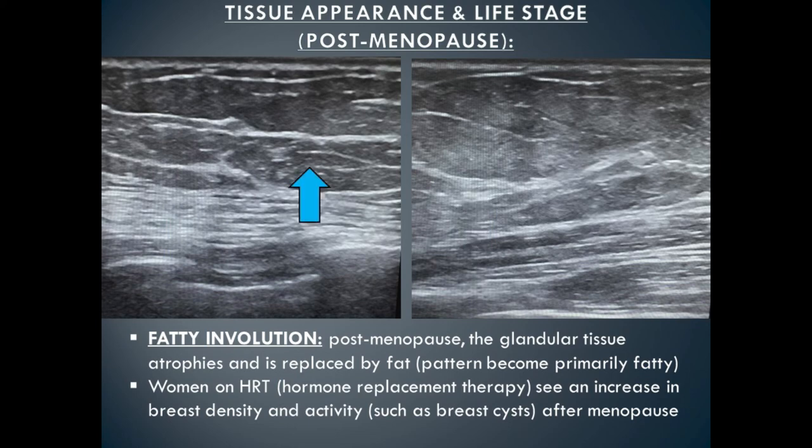In our last category, after menopause, the glandular tissue atrophies and is replaced by fat. The overall pattern becomes fatty with fewer areas of glandular tissue. Though this occurs in the majority of people, not everyone will have fattier tissue after menopause — some people still have very dense tissue. Women on hormone replacement therapy will also have a denser breast pattern after menopause.